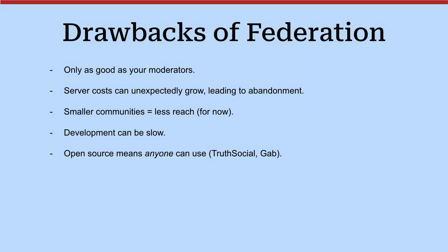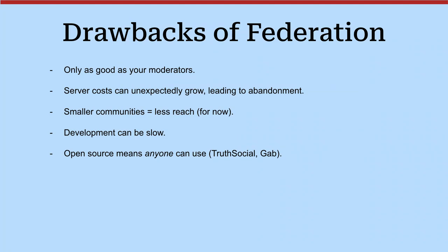Open source does mean that anyone can use it. There are services out there — Truth Social and Gab are the two that come to mind — which took the Mastodon code and forked it to make their own platform. Gab has a lot of white supremacists and that sort of stuff. That's kind of the drawback with any open-source software. Most Mastodon instances don't interact with those two. Software can be used for things that some people may find not acceptable.